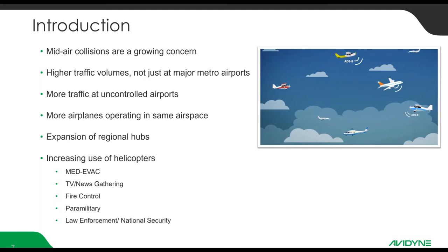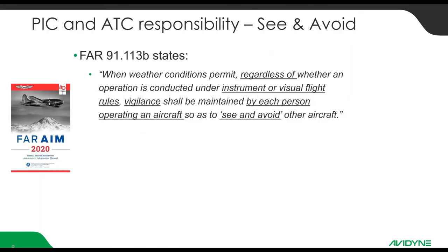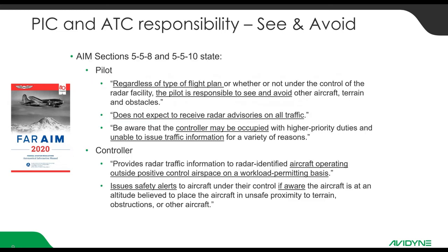That aside, the airspace is typically a lot more crowded. Let's talk about see and avoid. The FAR regulations — FAR part 91.113B states that when weather conditions permit, regardless of whether an operation is conducted under instrument or visual flight rules, vigilance shall be maintained by each person operating an aircraft so as to see and avoid. That's what the FARs say about pilot responsibility when it comes to traffic avoidance.